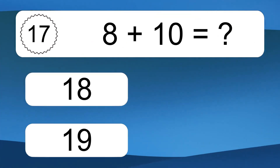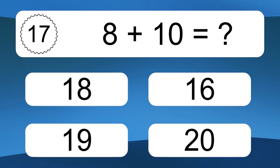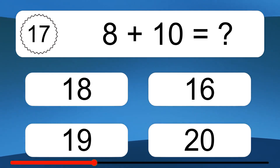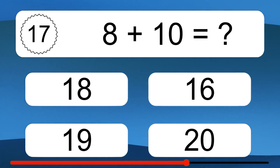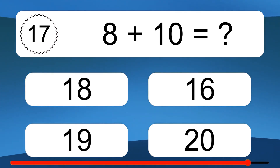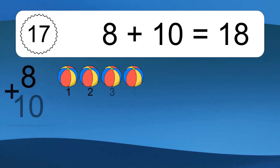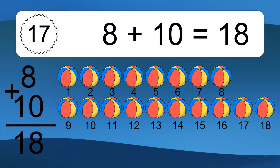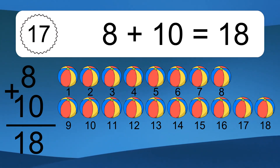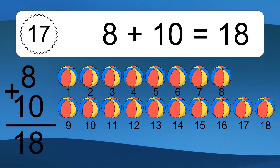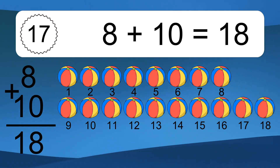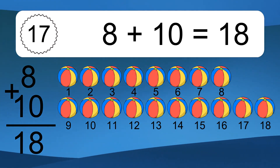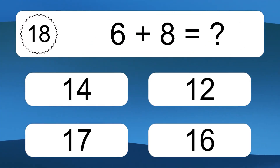8 plus 10 equals what? 8 plus 10 equals 18. Let's count it: 1, 2, 3, 4, 5, 6, 7, 8, 9, 10, 11, 12, 13, 14, 15, 16, 17, 18. 6 plus 8 equals what?